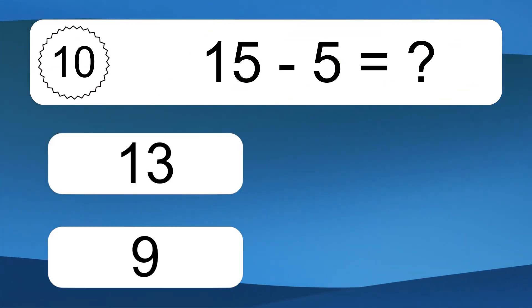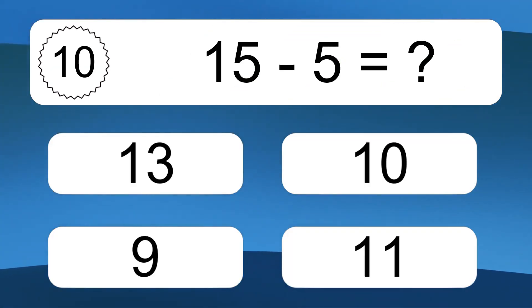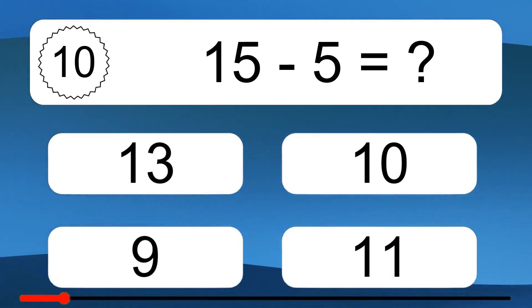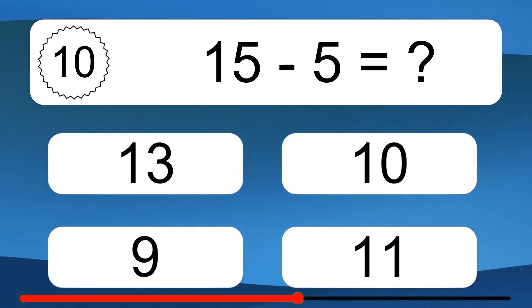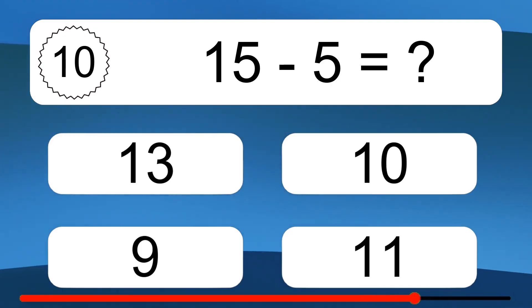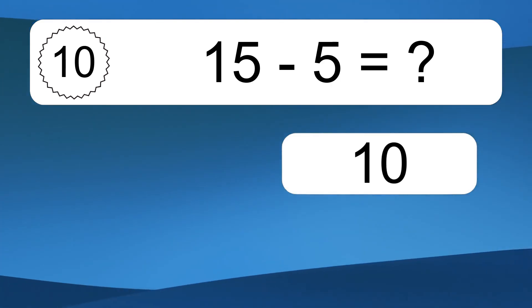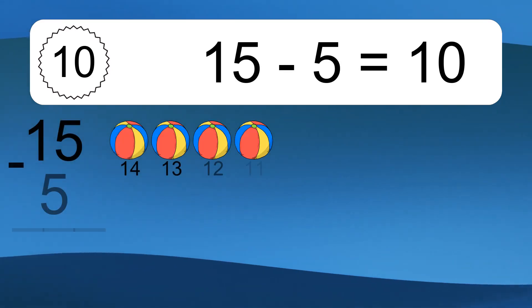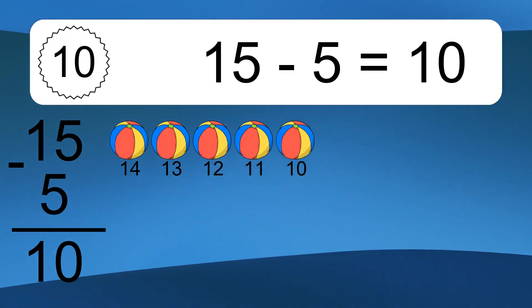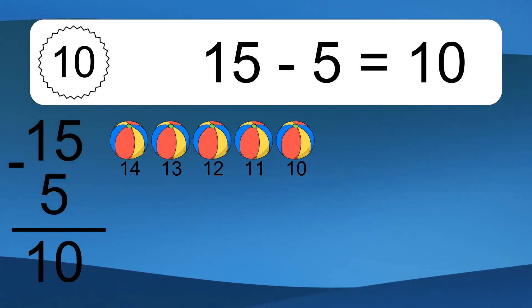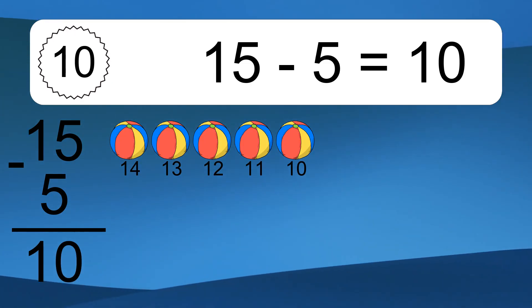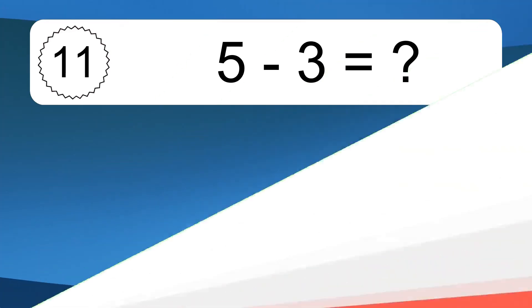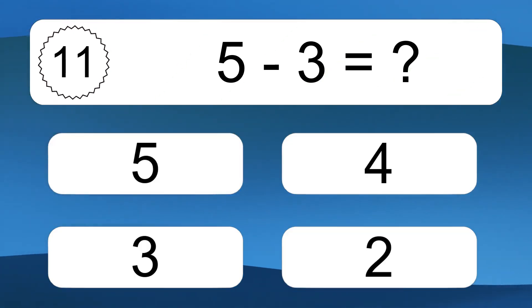15 minus 5 equals what? 15 minus 5 equals 10. Let's count it: 14, 13, 12, 11, 10.